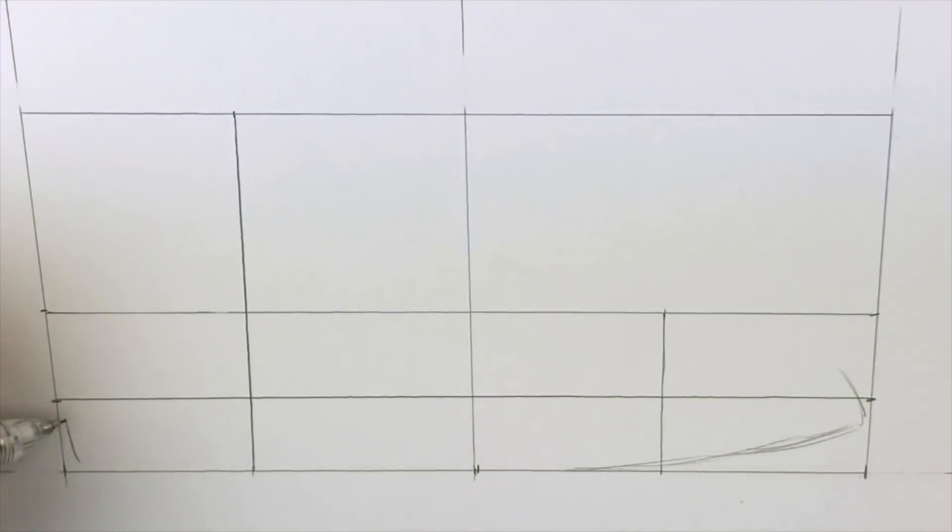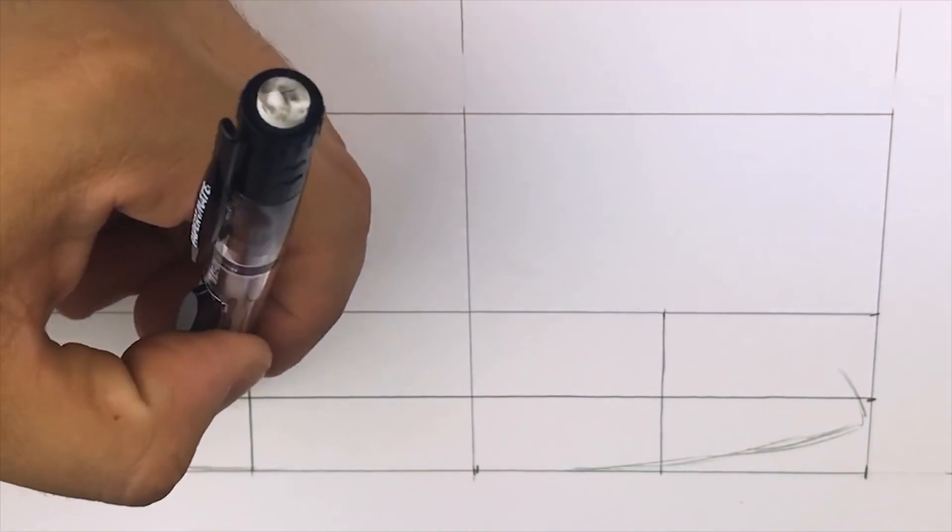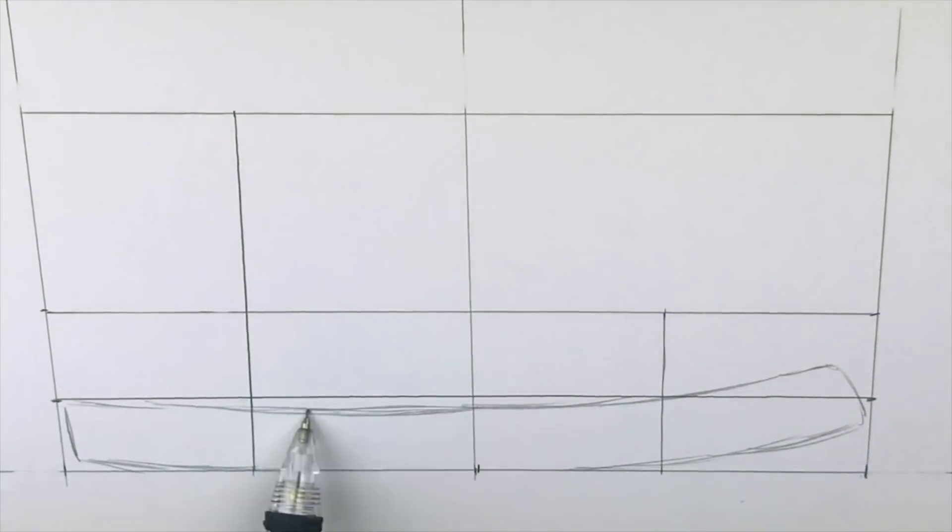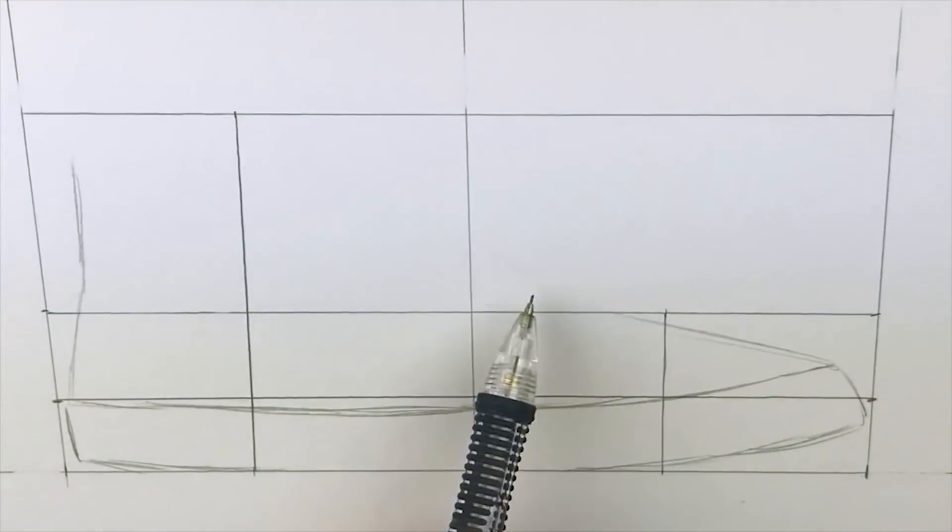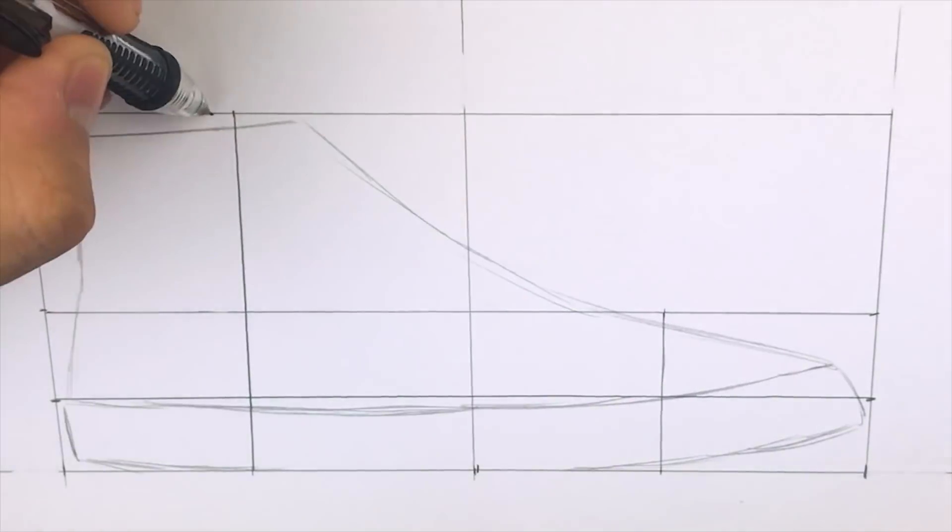Then I'm going to go ahead and start on the outsole. As usual, you want to look at where I place my lines in relation to where we have the guidelines currently. This will give you a good idea for how the positioning of the shoe should look.